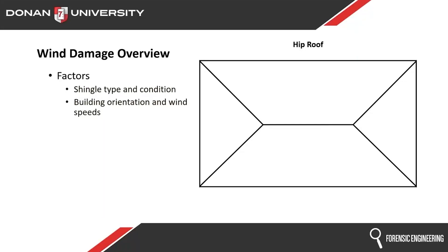What about the building orientation to the wind and the wind speed? For this demonstration, at least for this diagram, we're talking about a hip roof. The wind pressures are going to be the highest at all the edges, which means the eaves around the bottom of the roof, and the ridges — meaning the flat ridges on the top and the hip ridges if it's a hip roof.